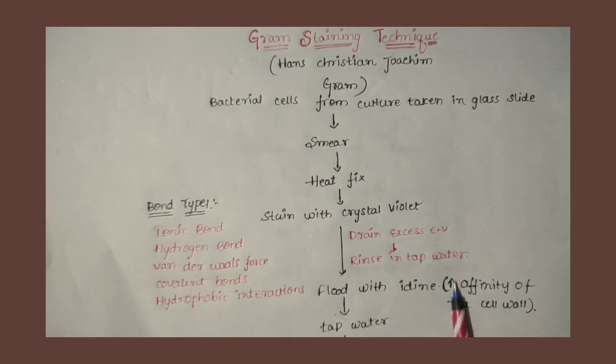Now after adding crystal violet, gram positive bacteria will appear in dark violet color.